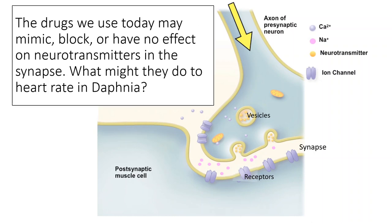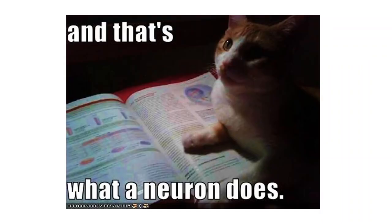So the drugs we're going to use today will either mimic, block, or have no effect on the neurotransmitters in the synapse. So think about what they might do to the heart rate of the daphnia for each one of these things. Mimicking, blocking, or having no effect. And in short, that's what a neuron does. As I mentioned, it's a lot more complicated with figuring out the cell chemistry and neurotransmitters and all that. But for the purposes of this lab, if you've got the general gist, then you should be fine.